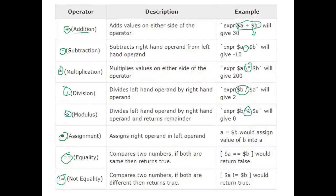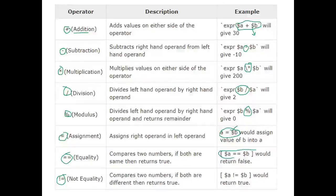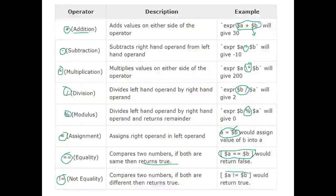Next we have the assignment operator. Whatever is stored in variable b will be stored in variable a — we need to use dollar to fetch the value from variable b. Next is the equality operator: we are comparing two variables, and if their values are equal it returns true. The not-equal operator compares two numbers; if both are different, it returns true.